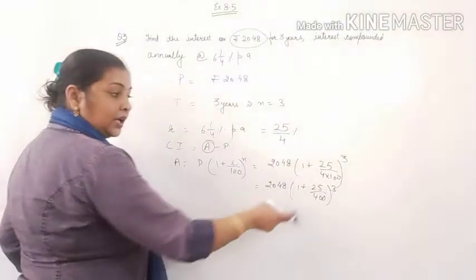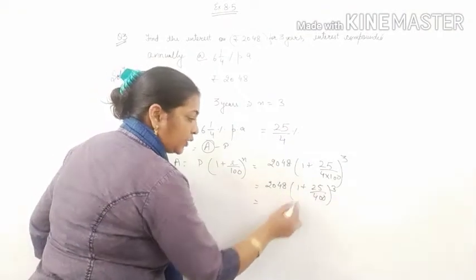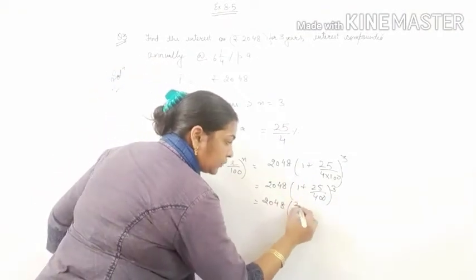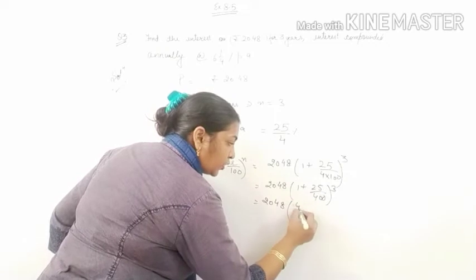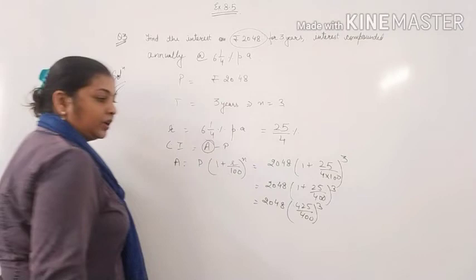It will be 1 plus 25 by 400 whole raised to the power 3. Now you know how to add a fraction to 1, just add numerator and denominator. It will be 425 by 400 whole raised to the power 3.